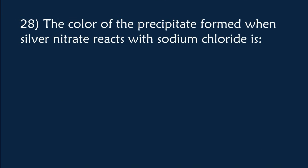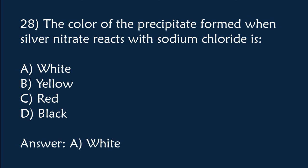The color of the precipitate formed when silver nitrate reacts with sodium chloride is: A) White, B) Yellow, C) Red, D) Black. The correct answer is Option A, white.